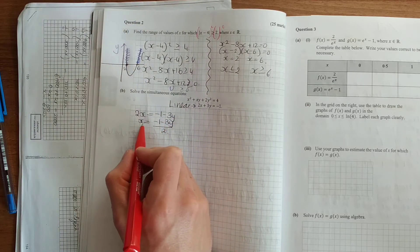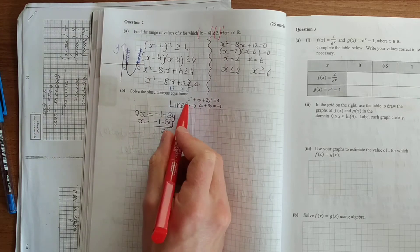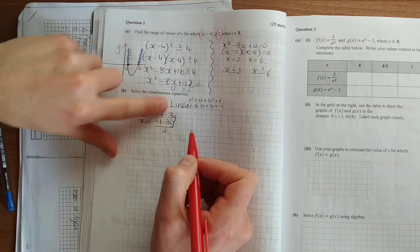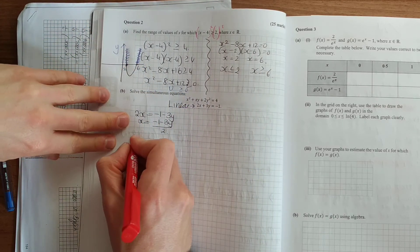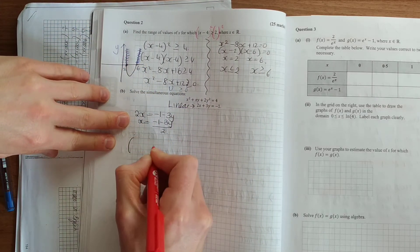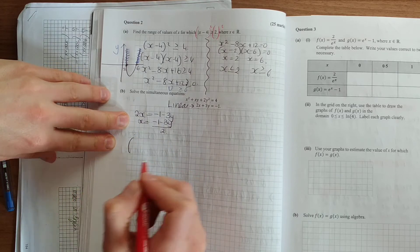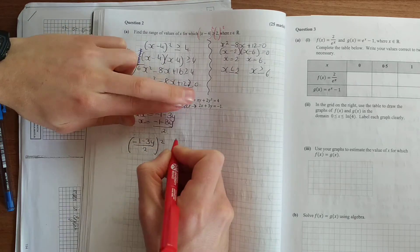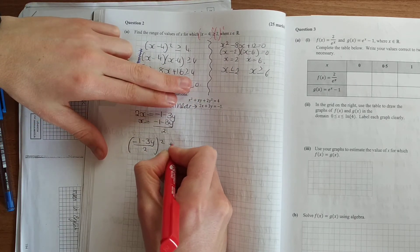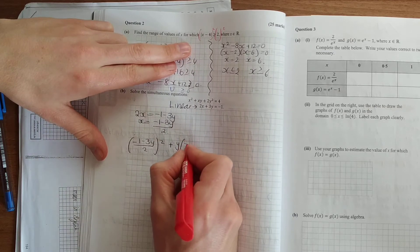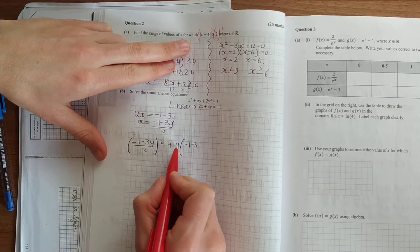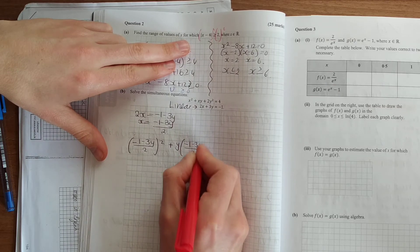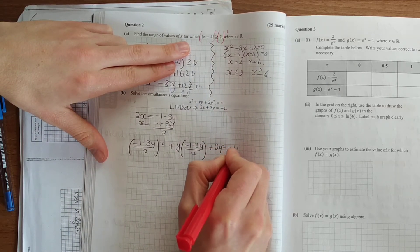Now once we have expressed x or y on its own, horse it into the top equation. So here we have x squared. Instead of getting x squared now, we have this all to be squared. And by doing this, we're going to have an equation with just one variable, that variable being y. Minus 1 minus 3y over 2 squared. Plus xy. So I'll say plus y times whatever x is. I just like having the y at the start in order to multiply them.